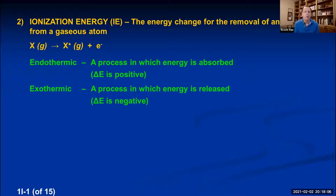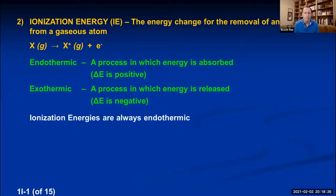When you pull an electron off of an atom, it takes energy to do that — just like it takes energy to rip a candy bar out of someone's hands. It takes energy to pull an electron away from an atom. So ionization energies are always endothermic, always positive values. They tell you how much energy you have to use to pull that electron out.